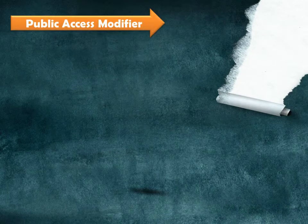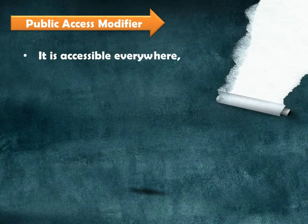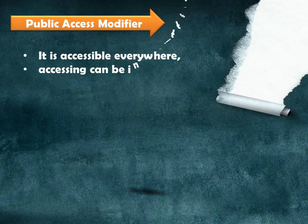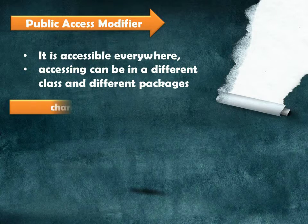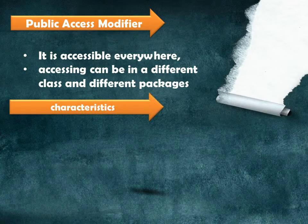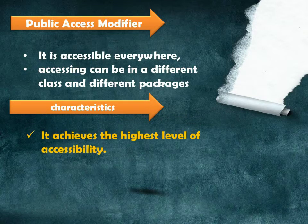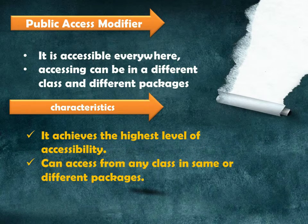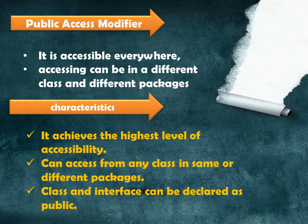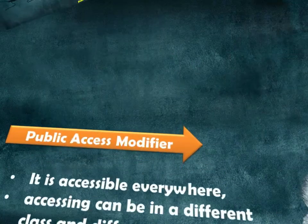The public access modifier is accessible everywhere. All code can access the class, data member, constructor, or method regardless of where the accessing code is located. Accessing code can be in a different class and a different package. The public access modifier achieves the highest level of accessibility and can be accessed from any class in the same or different package. A class or interface can be declared as public.